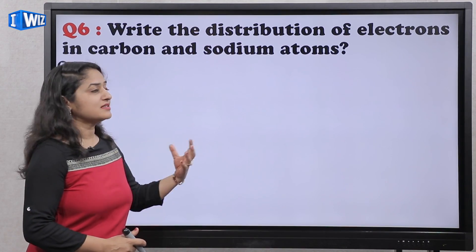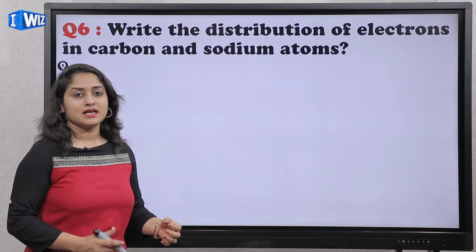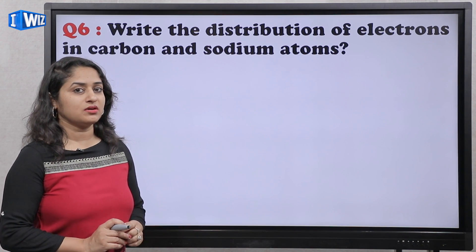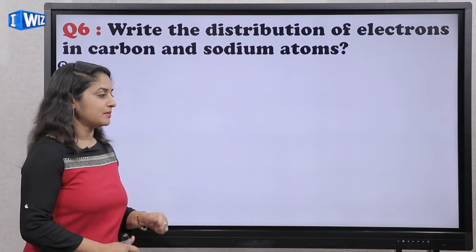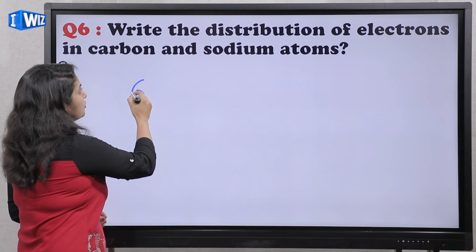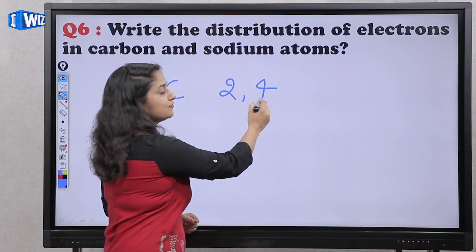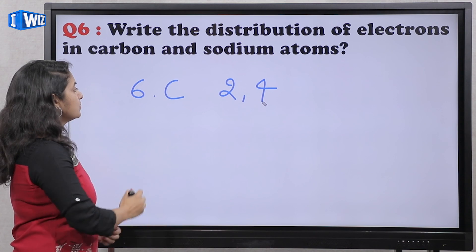Next question hai: Write the distribution of electrons of carbon and sodium atom. Iske liye aapko iska atomic number pata hona chahiye. Toh carbon ka atomic number hai six. So iske configuration hoogi first shell mein two electrons and next shell mein four electrons.